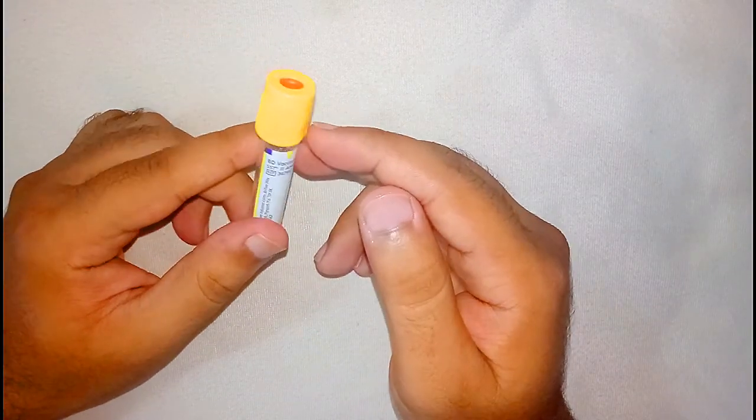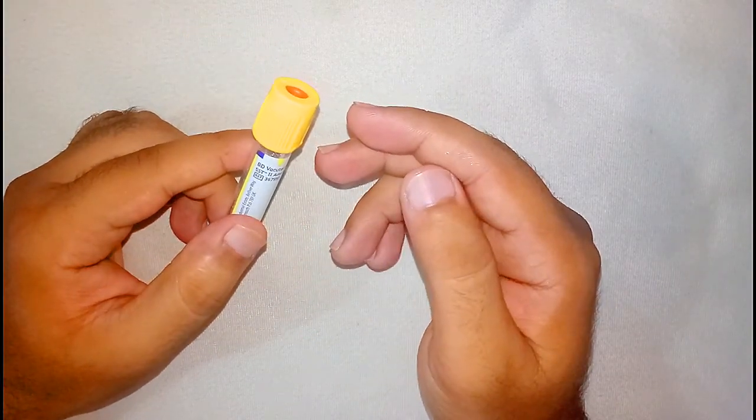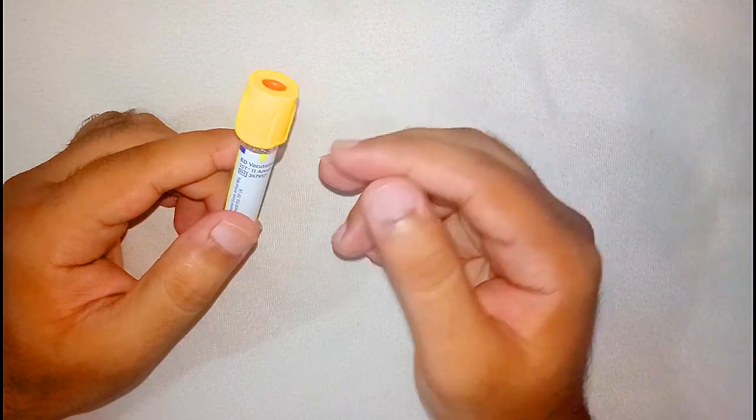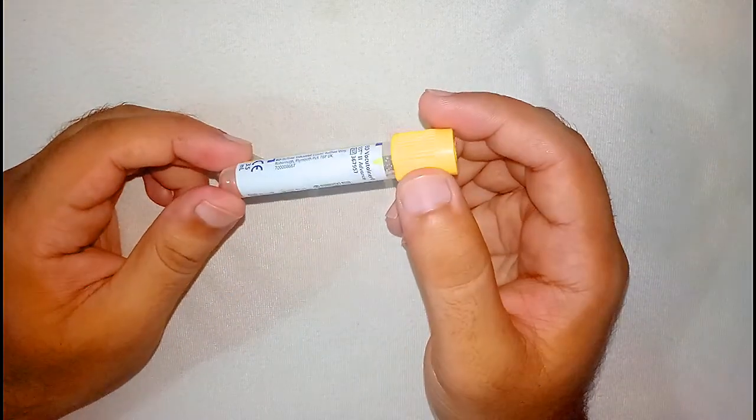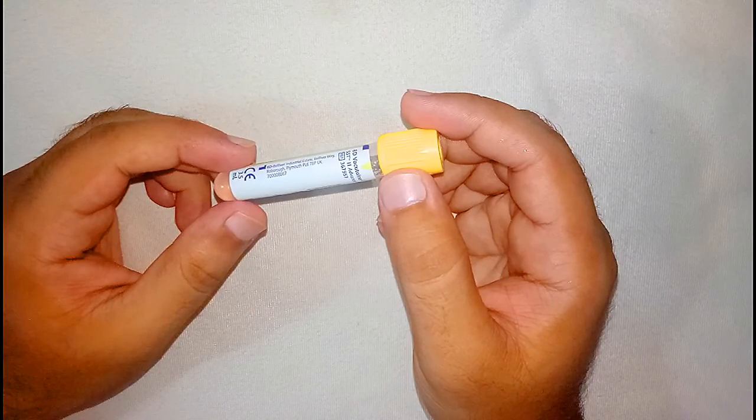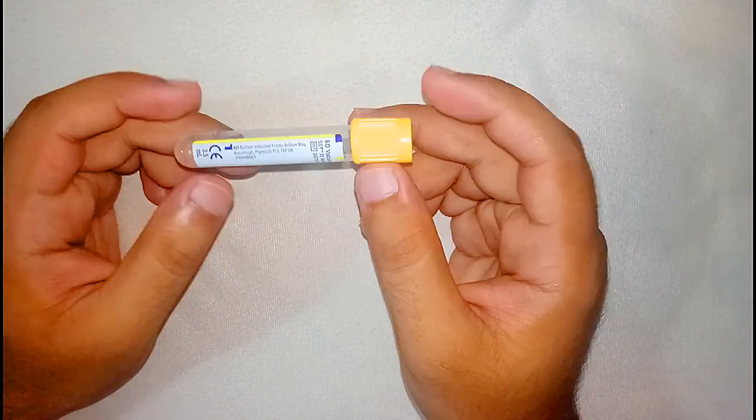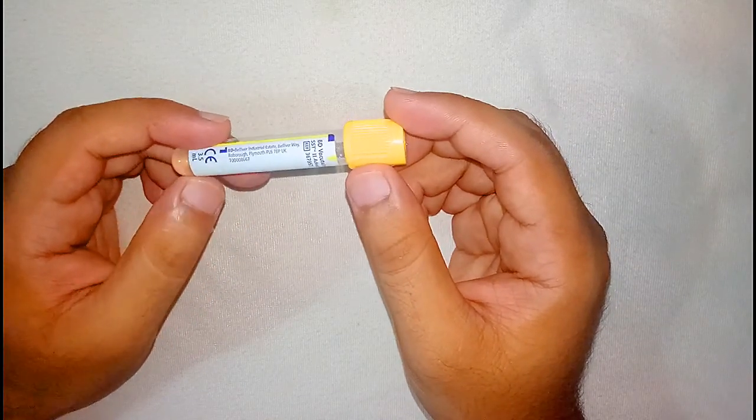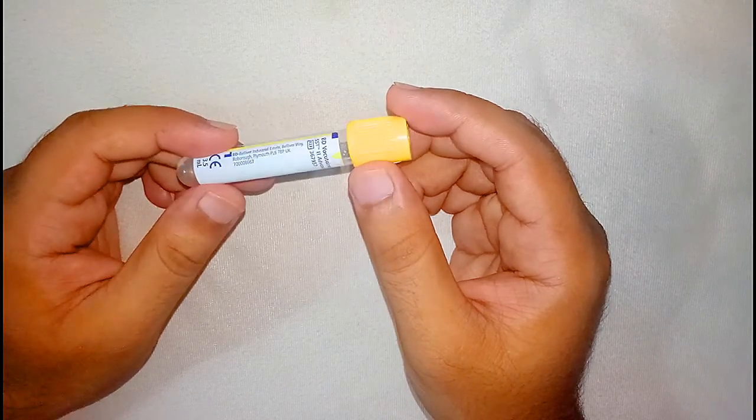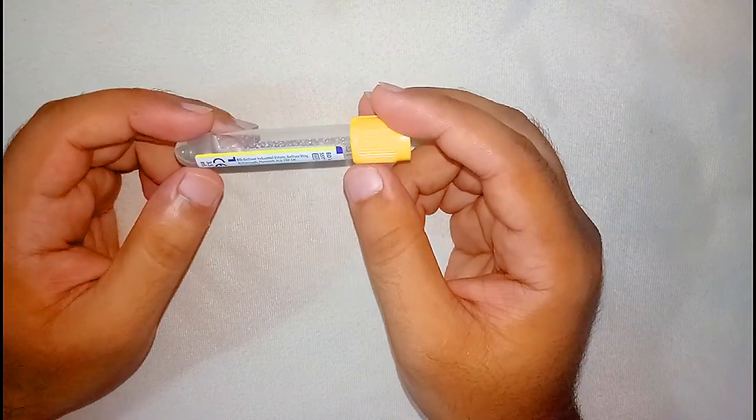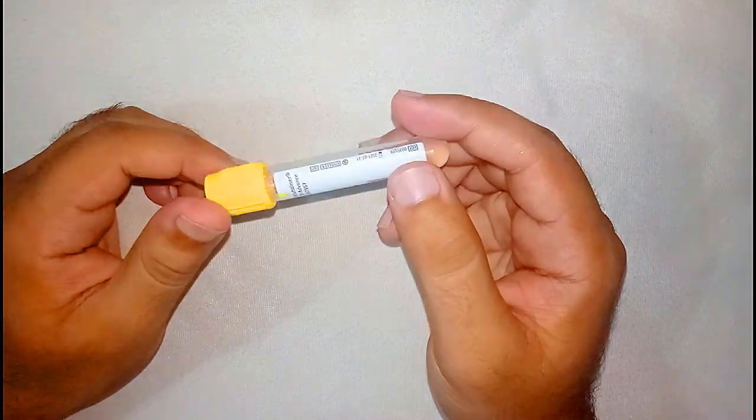viral markers, for example hepatitis B, C, HIV. These are viral markers which are done on serum. Secondly, LFTs, meaning liver function tests, which contain AST, ALT, bilirubin, etc. And after that there are RFTs. RFTs